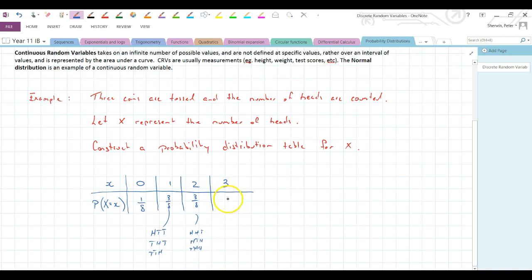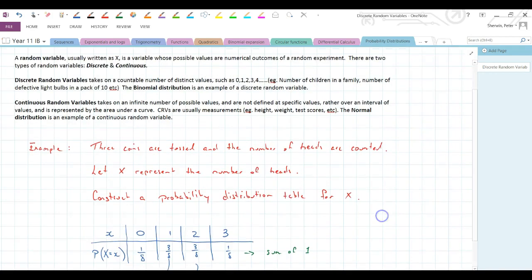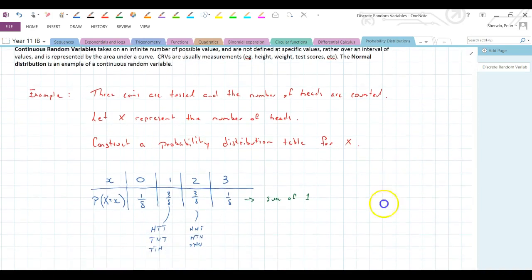And three heads, well, that's just only one outcome that works there. Now, what we'll notice here is that we get a sum, always, of our probability distribution table. That's the sum to eight over eight, or one. Our probabilities, because what we're doing, is we are outlaying all the probabilities, all the possibilities that there are. So, they have to sum to one. It's a probability distribution table for X, defined as the number of heads when you throw three coins. Alright, so that's example one. It's a discrete random variable distribution table.